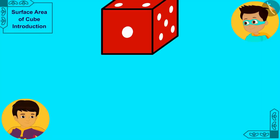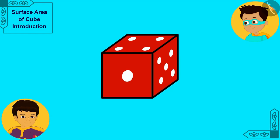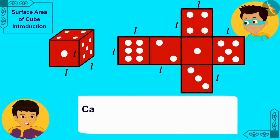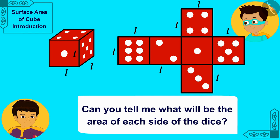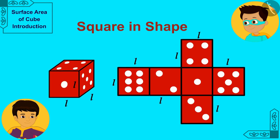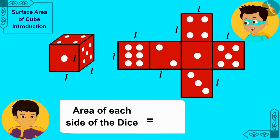Suppose the length of each side of this dice is L. If we open this cube shaped dice and flatten it, its shape of a net will be formed and it will look something like this. Can you tell me what will be the area of each side of the dice? Each side of a cube shaped dice is square in shape. Therefore, its area will be L times L or L squared.